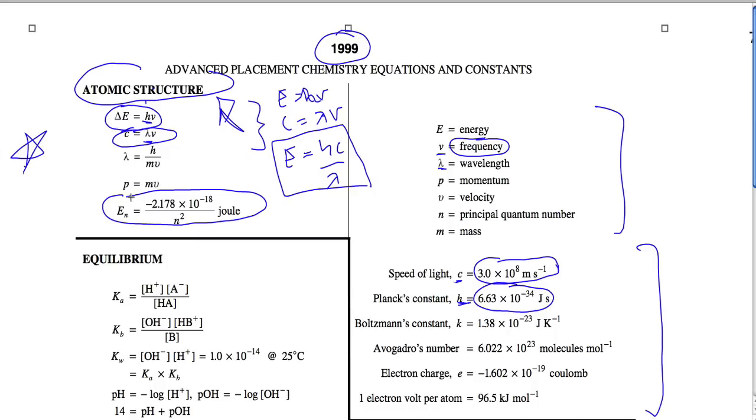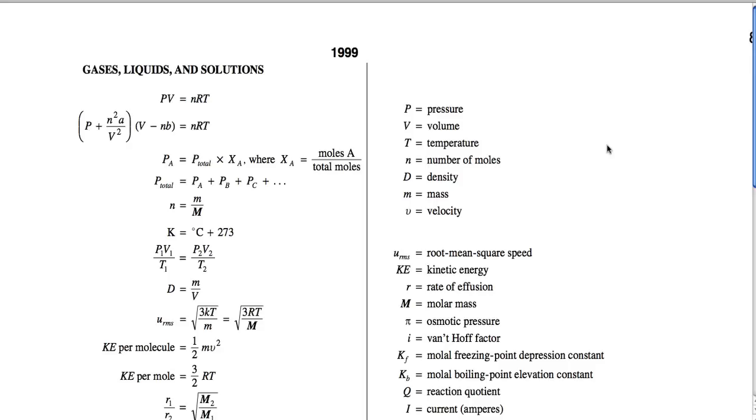This last equation is a way of calculating energy at any specific energy level n. The electrons have an energy at each energy level because the nucleus, which is positive, is trying to yank them in. The energy at each energy level is found by taking this number divided by the energy level squared. Before we start, it's important to know that wavelength is measured in meters but it's always given in nanometers. So there are 10 to the 9 nanometers in every one meter.